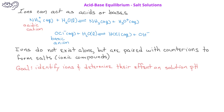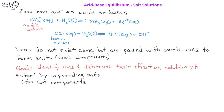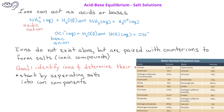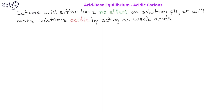The first step to do this is to separate the salt into its cation and anion components. You might want to recall some of the common polyatomic ions that you learned in previous courses. Cations will either have no effect on solution pH or they will make solutions acidic by acting as weak acids. Cations will never cause solutions to become more basic.